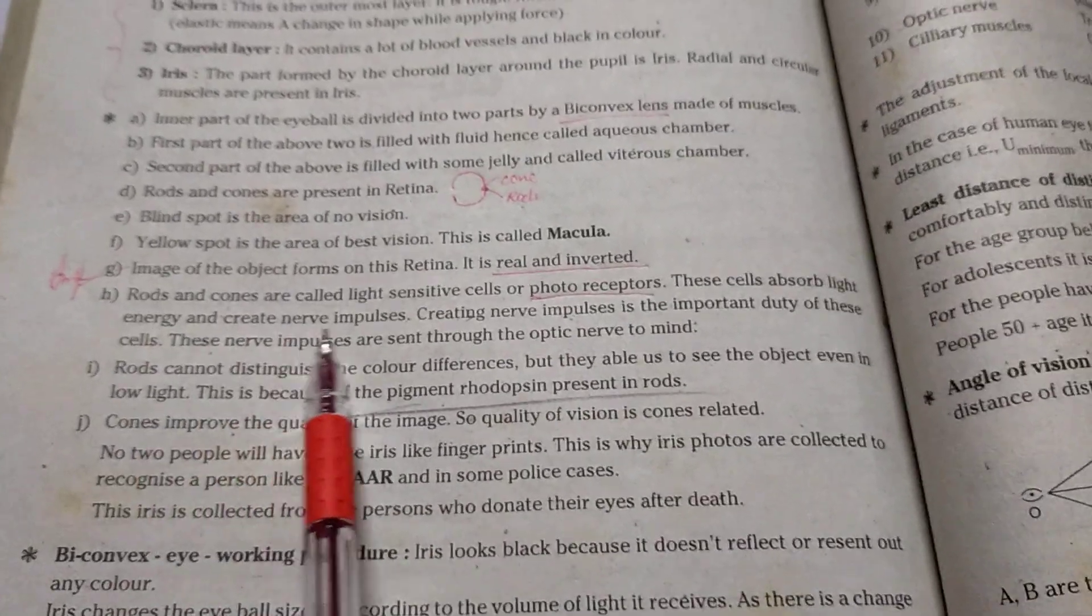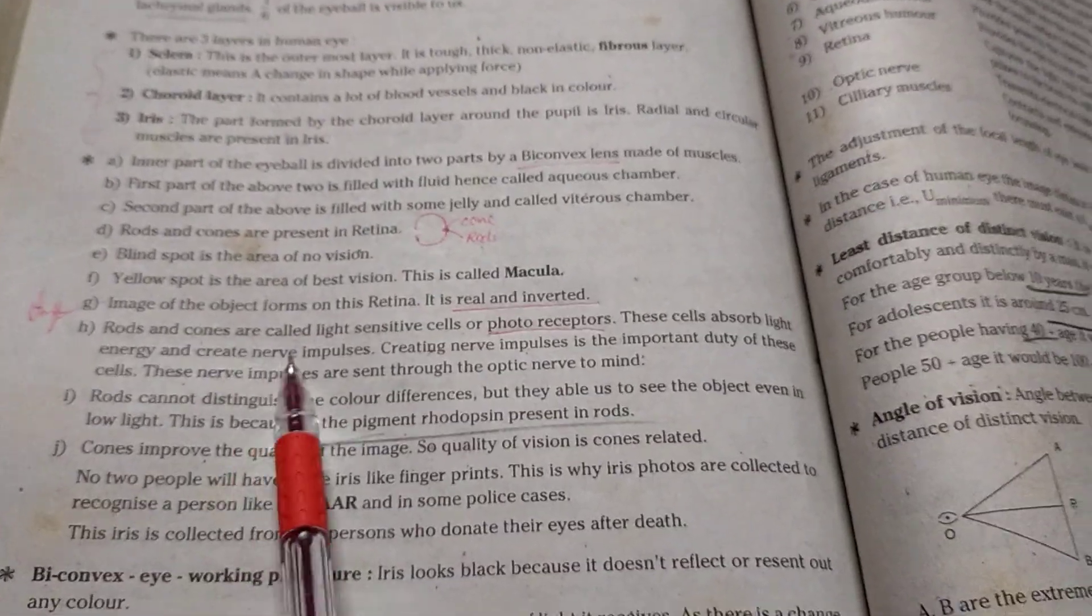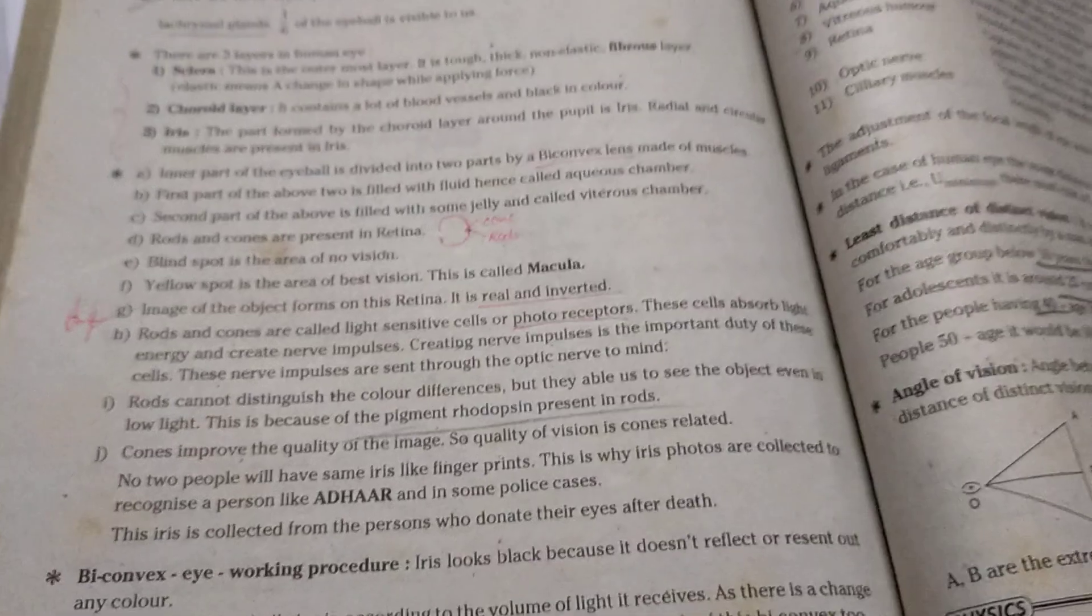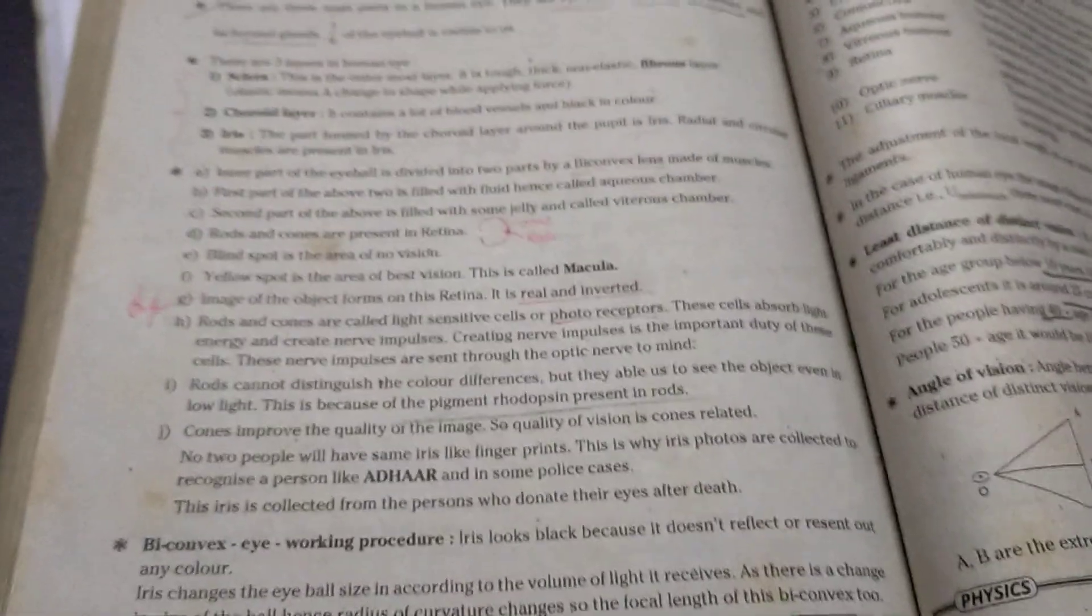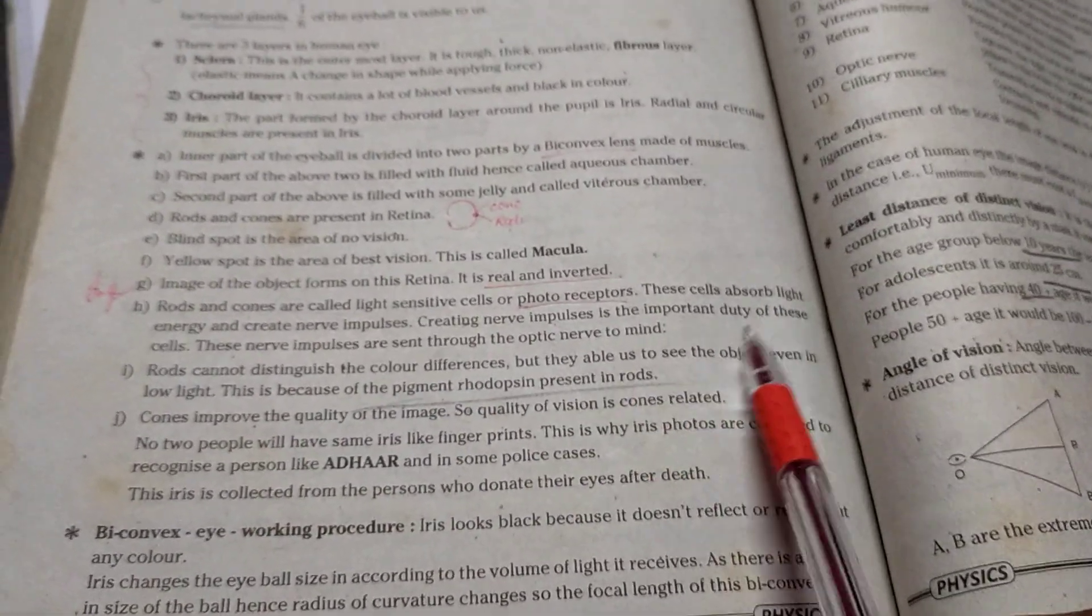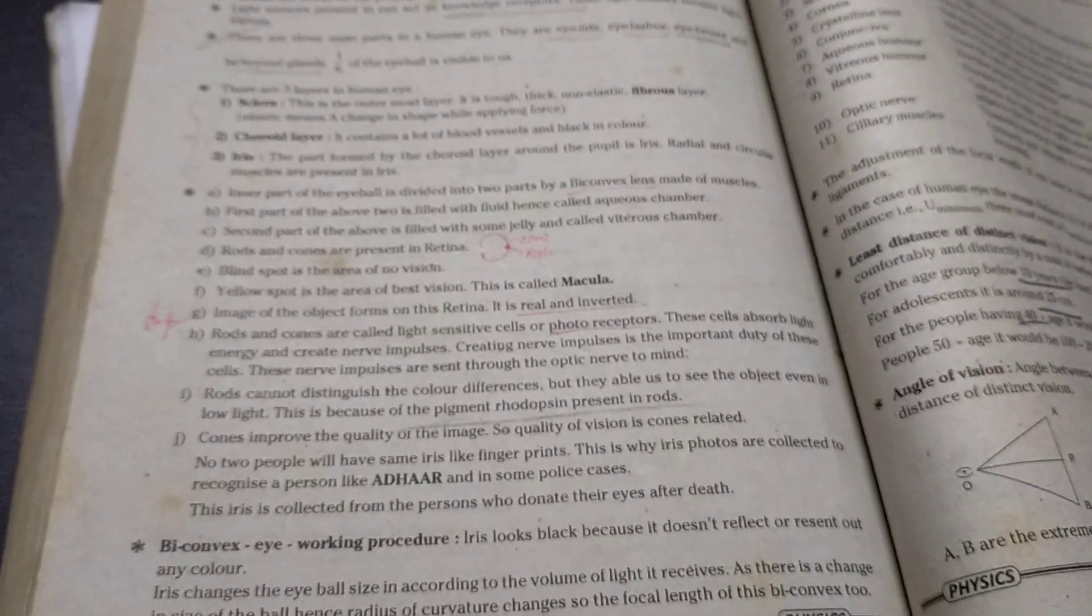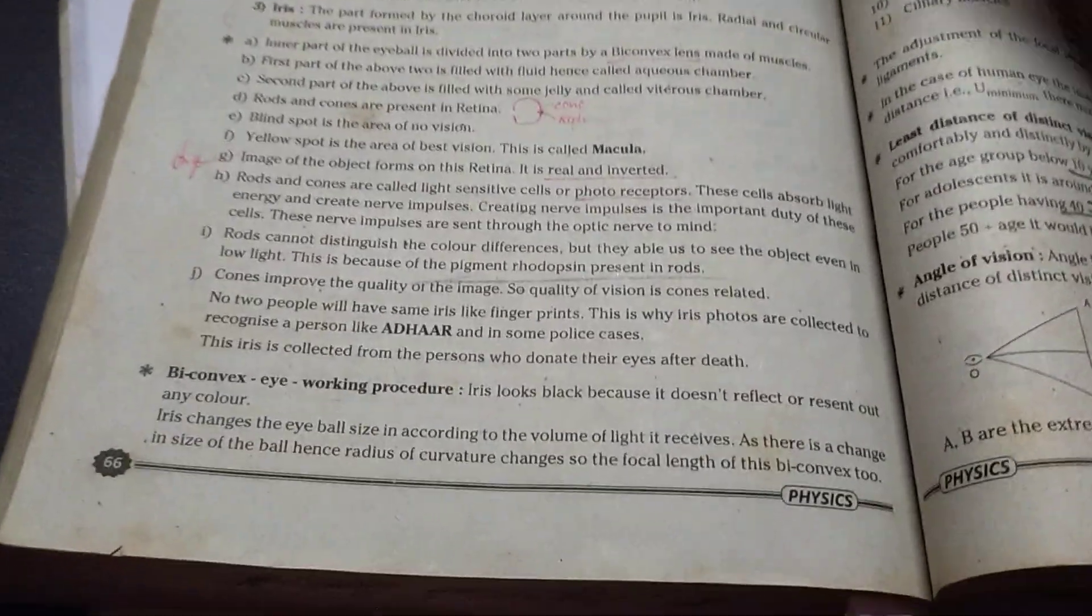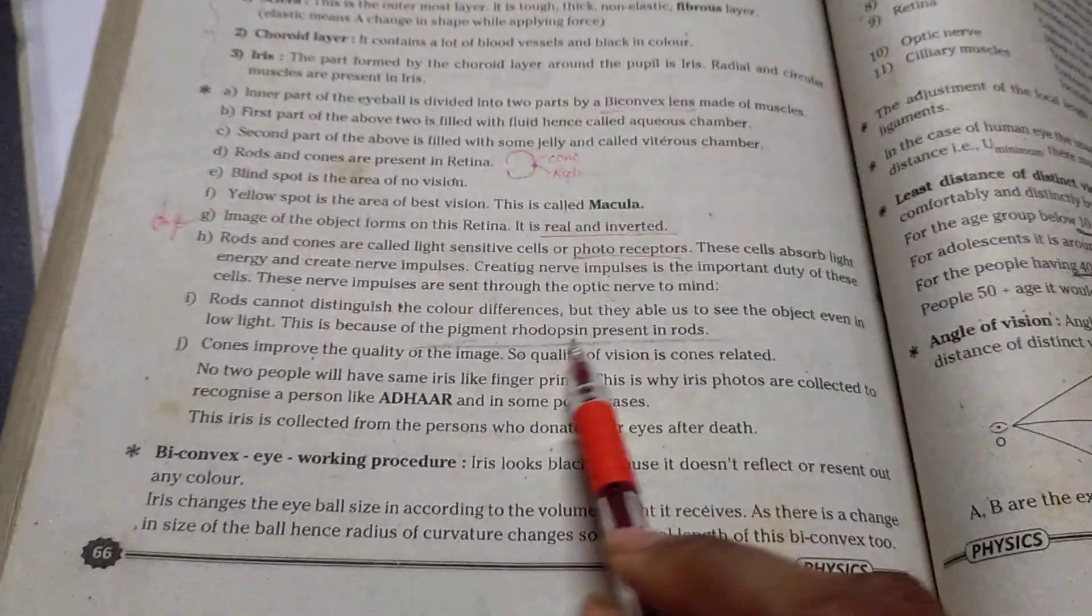And these cells absorb light energy and create nerve impulses. Creating nerve impulses is the important duty of these cells. Yes these rods and cones, the primary function of it is to transfer these signals. So these nerve impulses are sent through the optic nerve to mind. You know that optic nerve where you have studied in your earlier classes about it. Optic nerve in biology we can see there.